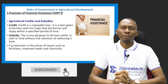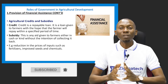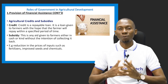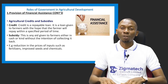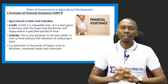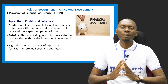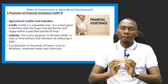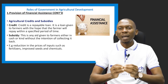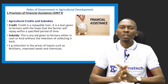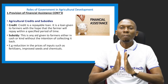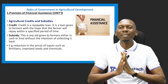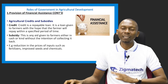Let's look at examples of a subsidy. We have reduction in the prices of inputs such as fertilizers, improved seeds and chemicals, which are things the farmer uses in the course of his production. The government pays off a particular amount concerning these inputs, and the farmer just pays a little — that's called a subsidy. The farmer doesn't pay back; it's given to farmers, either in cash or kind, without the intention of collecting it back.